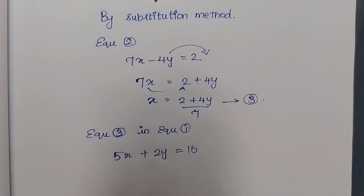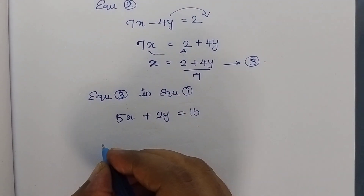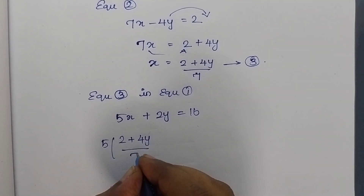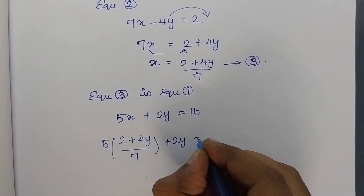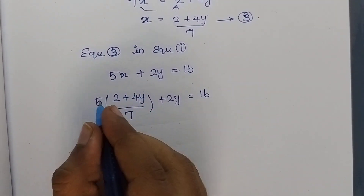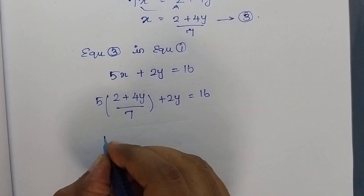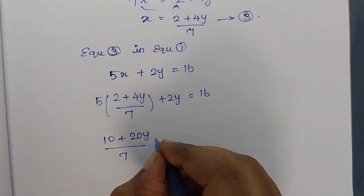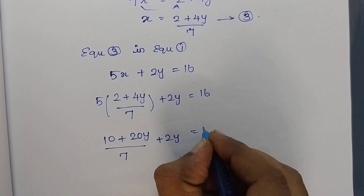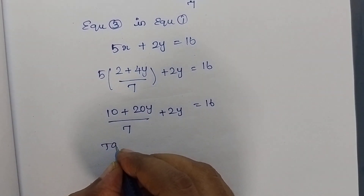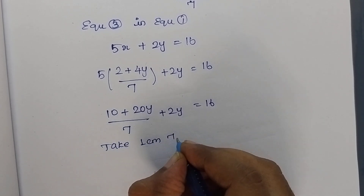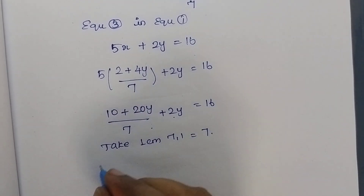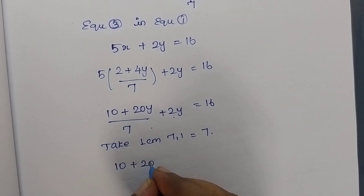I am going to substitute that here: 5 of (2 plus 4y divided by 7) plus 2y is equal to 16. Then I am going to multiply 5 inside: 5 into 2 is 10, plus 5 into 4y is 20y, all over 7, plus 2y is equal to 16.